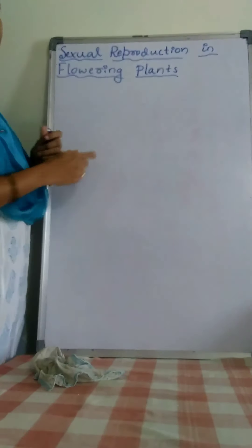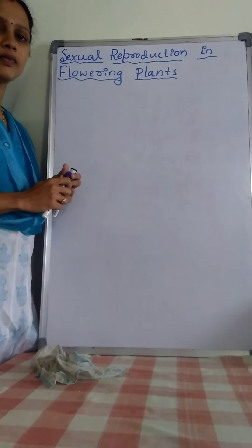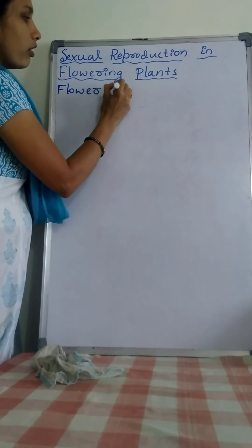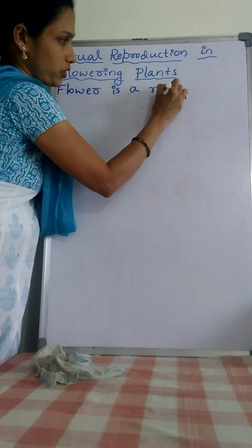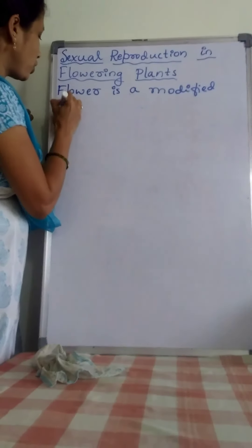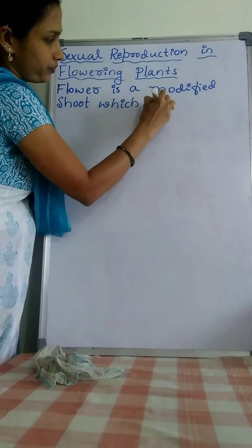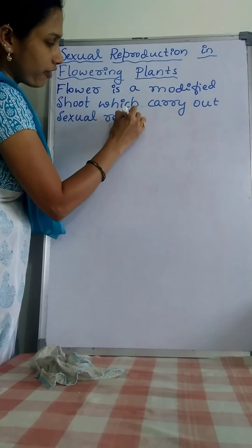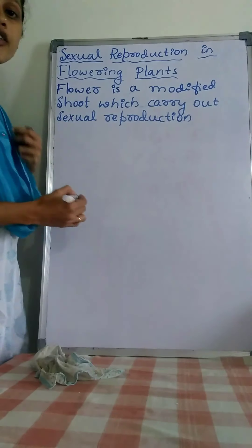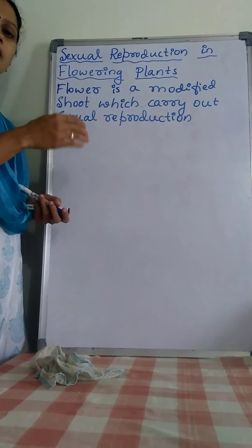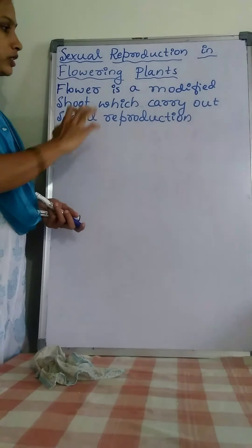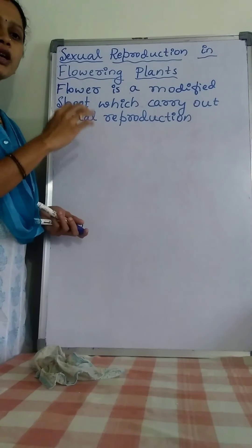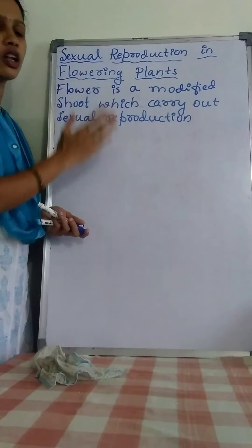Dear students, in this class let us discuss about sexual reproduction in flowering plants. Flowering plants come under angiosperms. This flower is a modified shoot which carries out sexual reproduction because the flower contains male and female reproductive organs which produce male and female gametes respectively. Formation of the gamete and fusion of the gamete is essential for sexual reproduction.